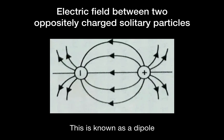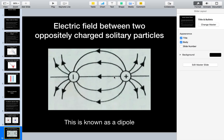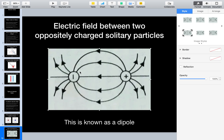For an electric field between two oppositely charged particles — one positive and one negative — all electric field lines move from the positive to the negative. This makes sense because a positive test charge is repelled by the positive charge and attracted towards the negative charge. So all electric field lines move from a positive charge to a negative charge.